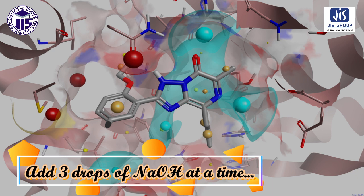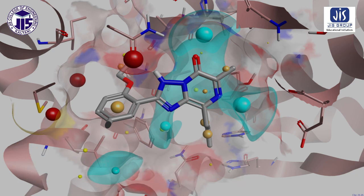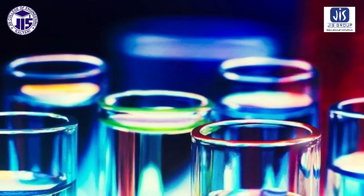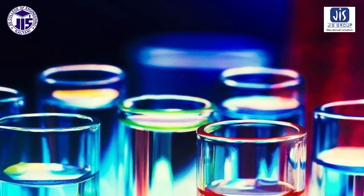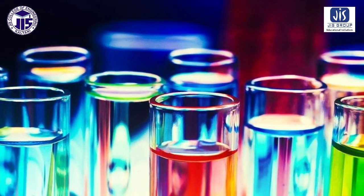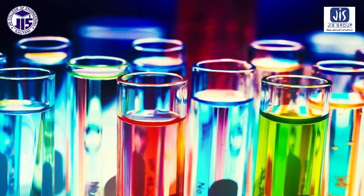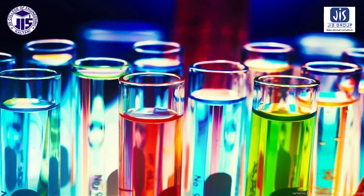After adding the drops of NaOH solution, we have to stir the solution with the conductivity cell, and it will show the conductance value. This is the process — uniformly add three drops and continue the process until the experiment is complete.